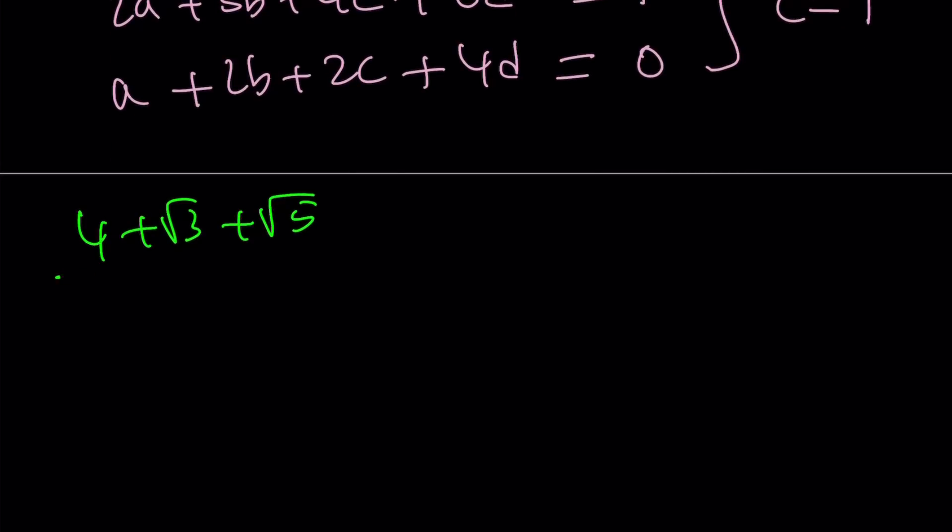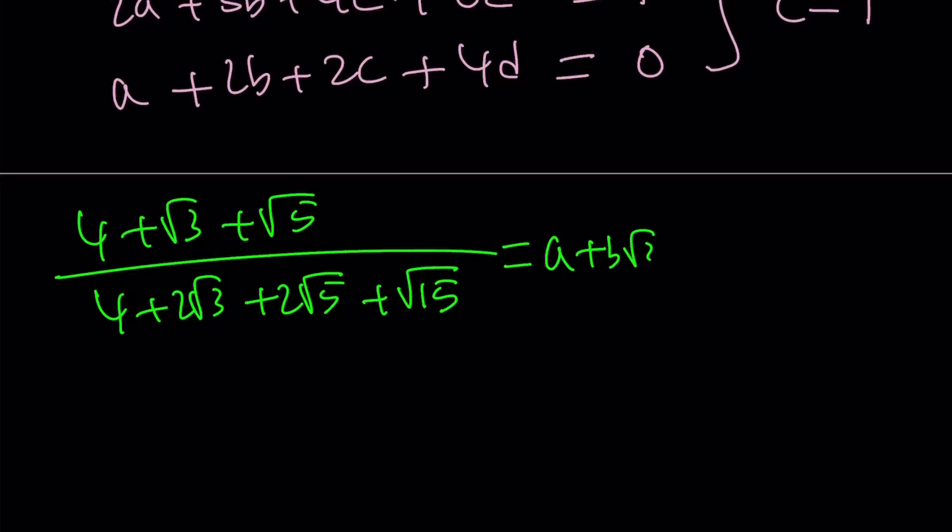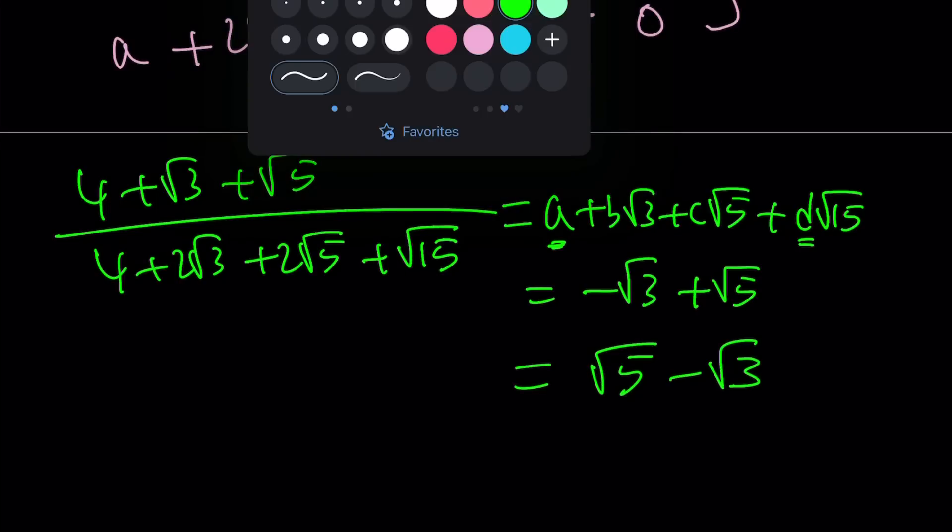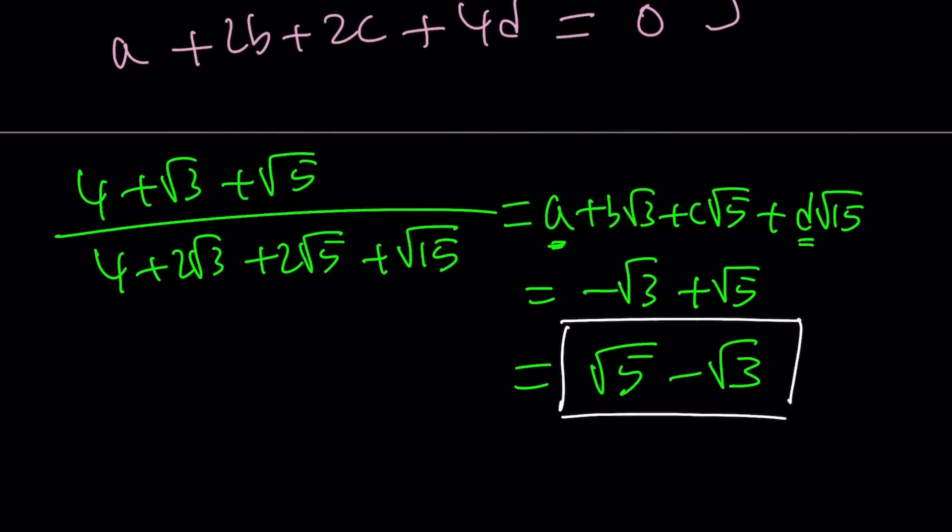Let's see what happens. Let's write the original expression. And this was equal to a plus b root 3 plus c root 5 plus d root 15, remember? Now, a is equal to 0, d is equal to 0. These are going to be 0s, but we're only going to have root 3 and root 5. b is negative 1, so it's going to be negative root 3 plus root 5, which you can write as root 5 minus root 3, which is kind of hard to believe, right? This complicated expression turning into something nice like this. And this brings us to the end of the first method.